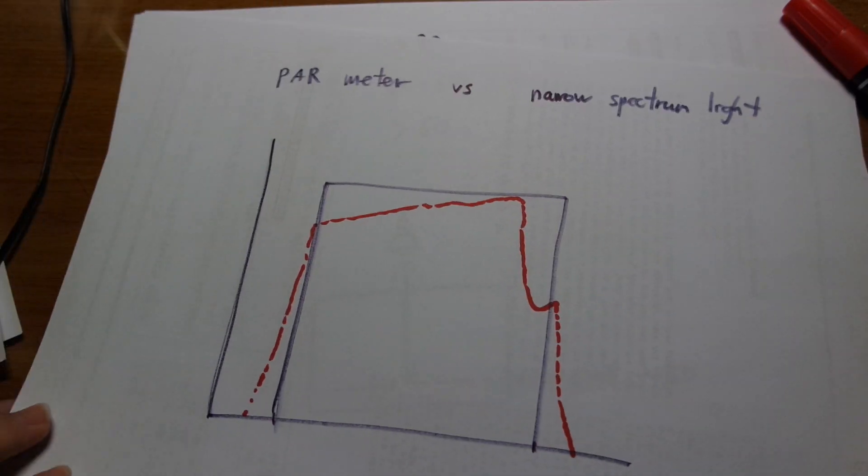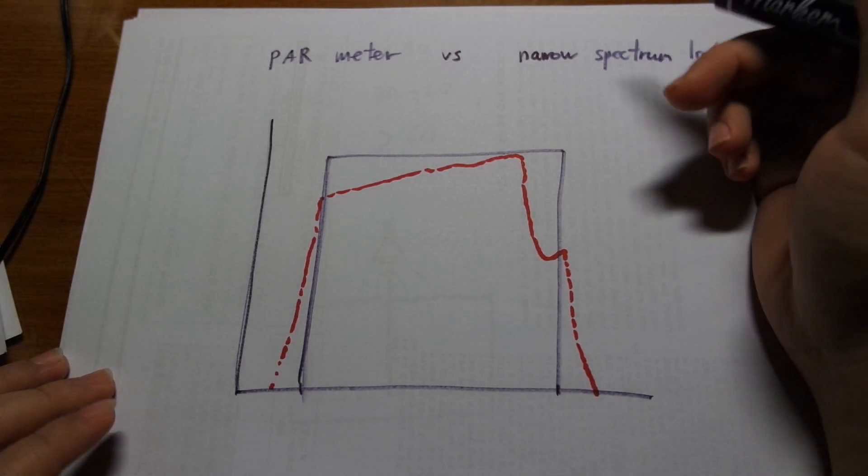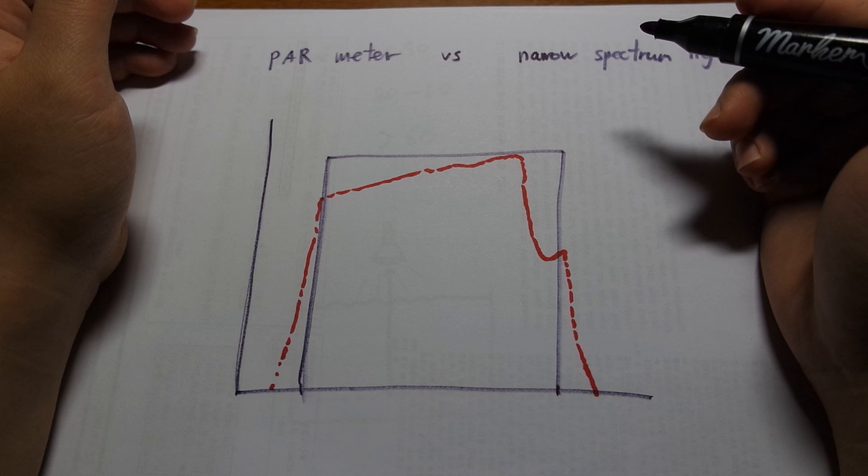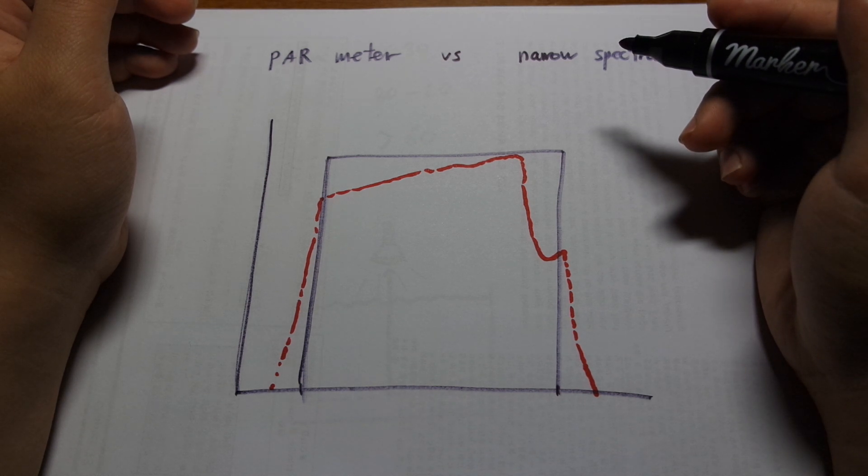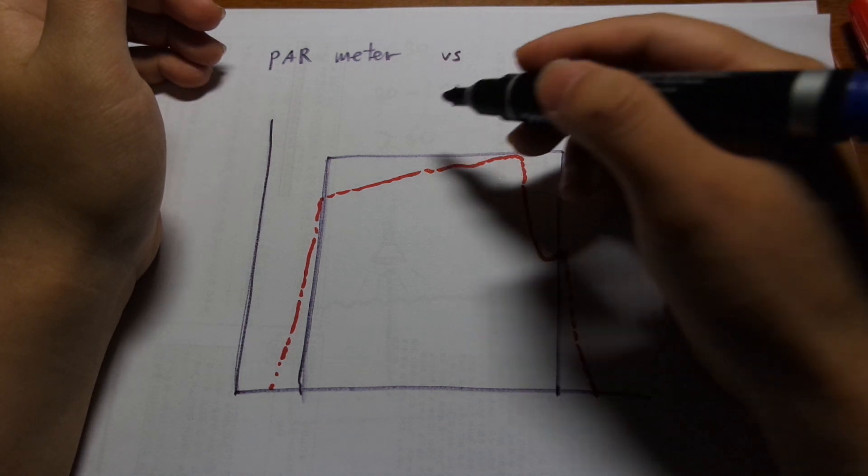Now, although PAR is considered like the gold standard of whether a light is worthy to grow plants, it does have its limitations. PAR meters are used to measure the PAR. There are these devices that you can use to measure the PAR level. And they don't exactly work as the theory works.